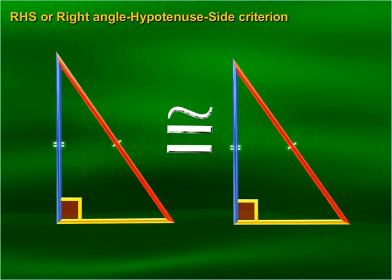RHS, or Right angle-Hypotenuse-Side criterion: If in two right triangles the hypotenuse and one side of one triangle are equal to the hypotenuse and the corresponding side of the other triangle, then the triangles are congruent.